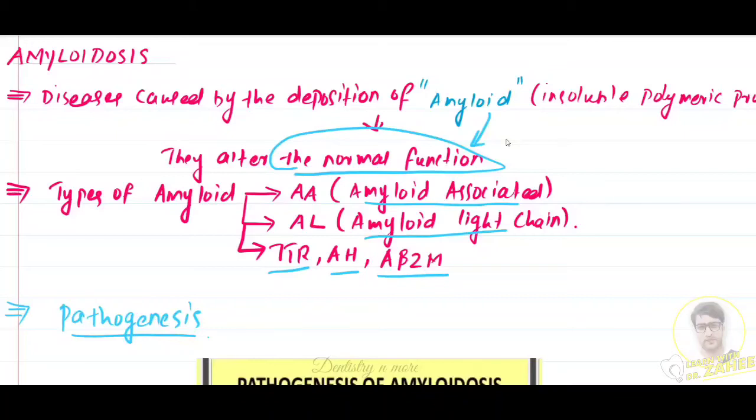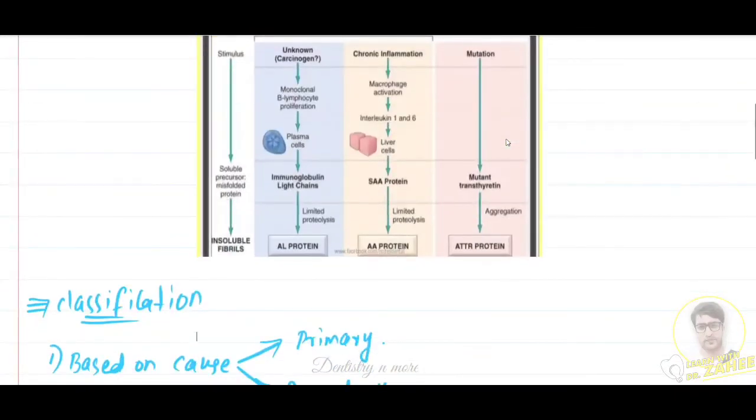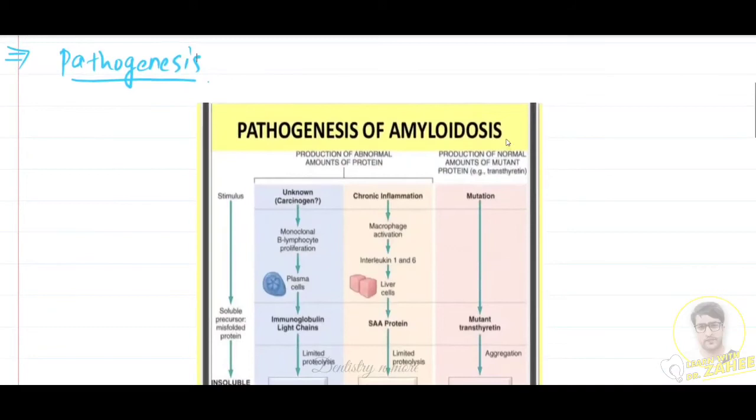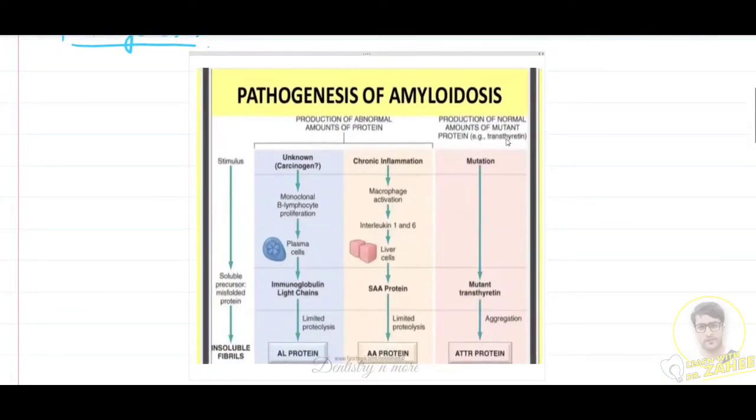What is the pathogenesis of amyloidosis? Amyloidosis is a result of immunological response - multifactorial causation. There are different mechanisms involved in different types of amyloid. Fundamentally, it is a disorder of protein misfolding.